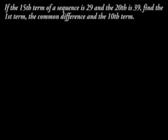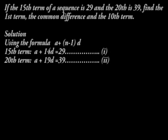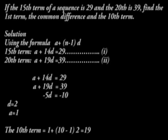In another example, if the 15th term of a sequence is 29, and the 20th term is 39, find the first term, the common difference, and the 10th term. In our solution, using our formula, 15th term is given by A plus 14D equals 29. 20th term, A plus 19D is 39. Solving the simultaneous equations, we have D is 2, A is 1, and therefore the 10th term is 19.